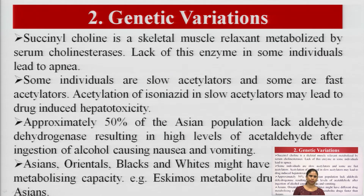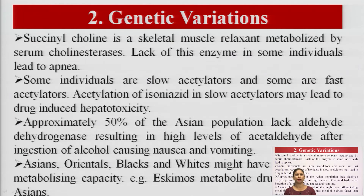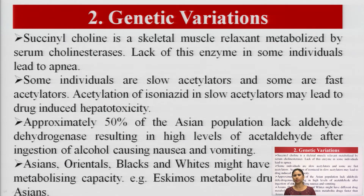Genetic variation also affects drug metabolism. For example, succinylcholine is a muscle relaxant drug metabolized by serum cholinesterase. This enzyme is lacking in some individuals, so succinylcholine is not metabolized or is metabolized at a lower rate in such persons. This may lead to the condition of apnea — suspension of breathing — which mainly occurs during sleep, known as sleep apnea.